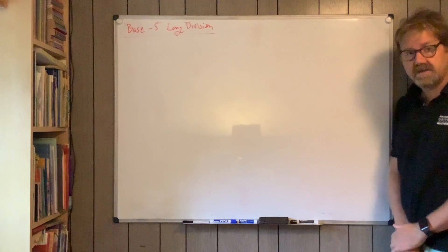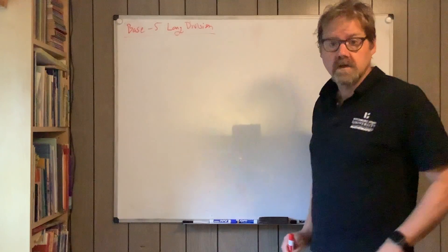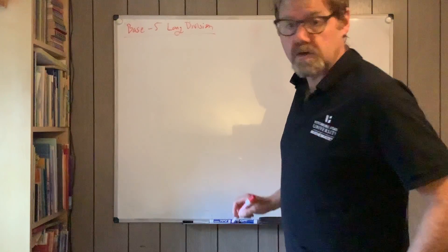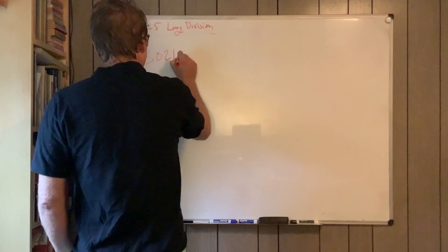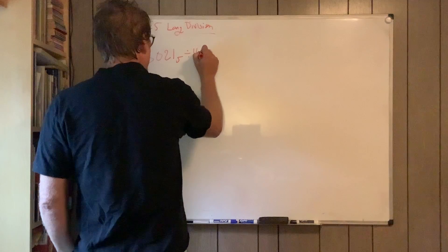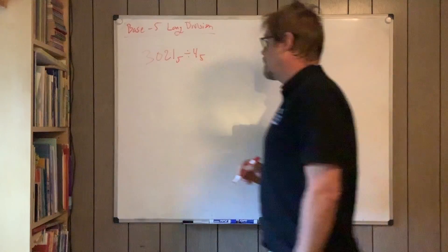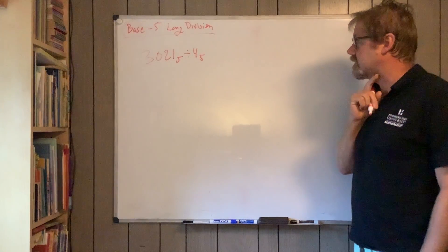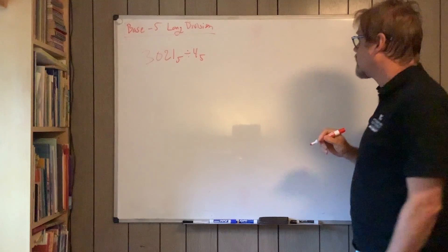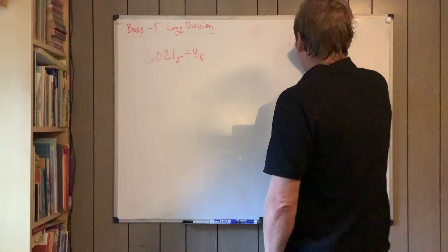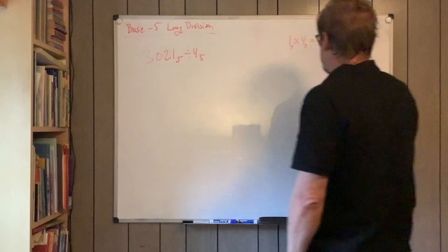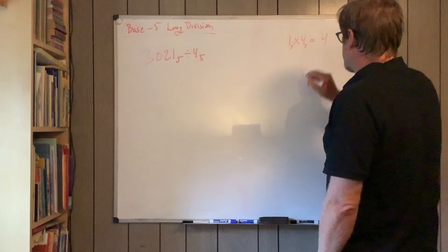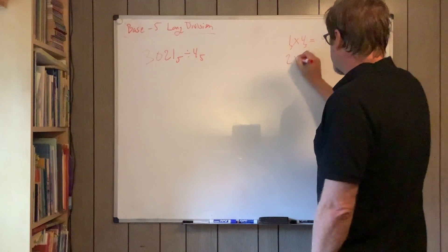This is a little bit more with base 5 long division. 3021 base 5 divided by 4 base 5. What I'm going to do - you can remember if you have your little multiplication table we can do this, and I'm not going to stop writing the subscript fives.